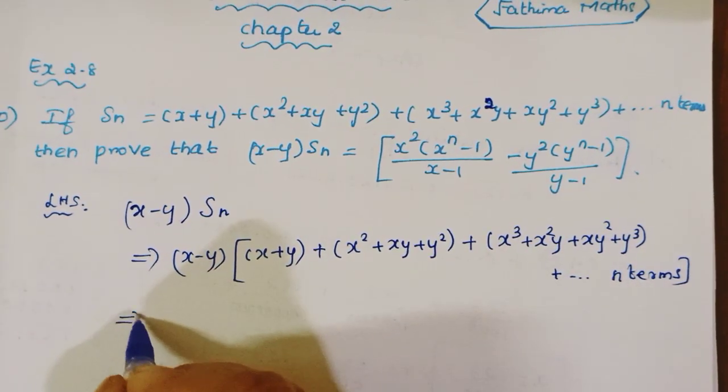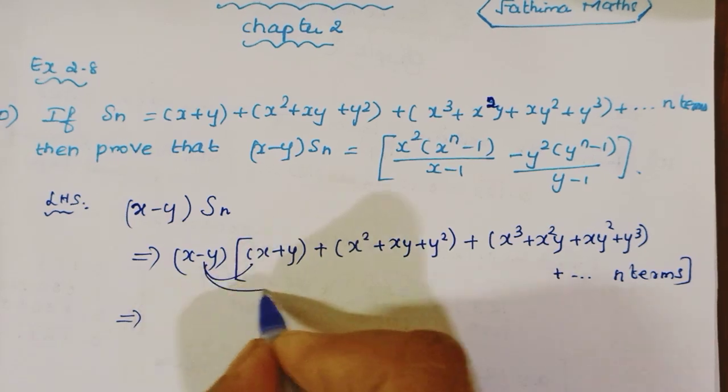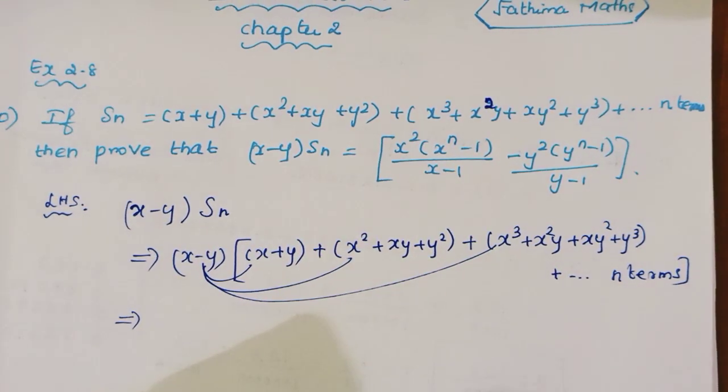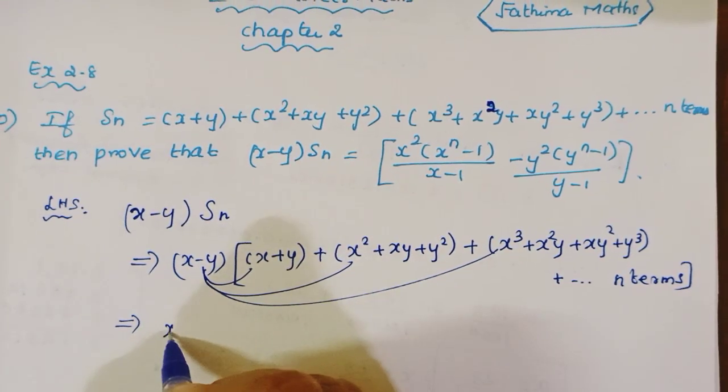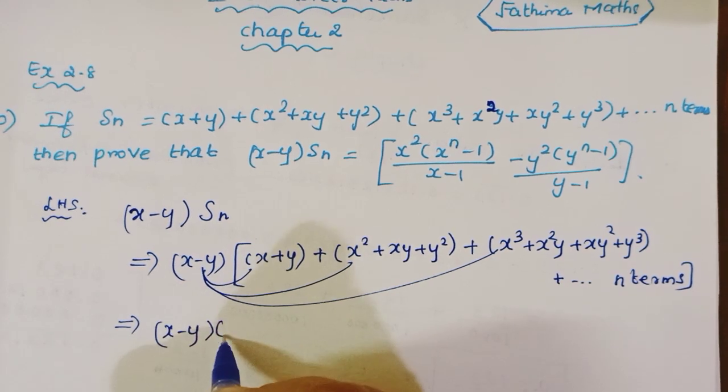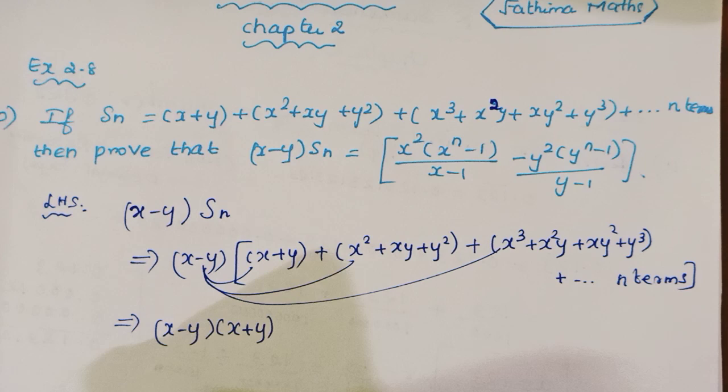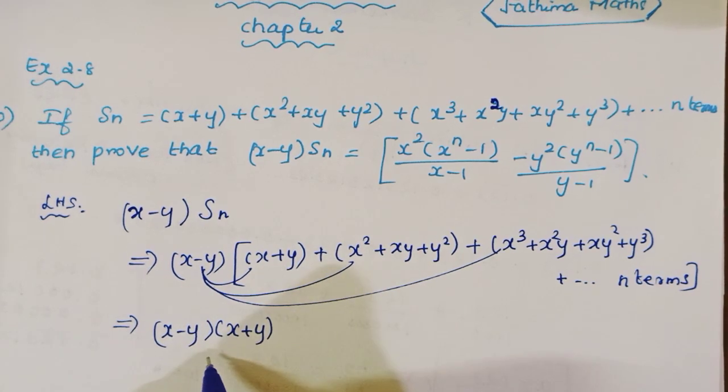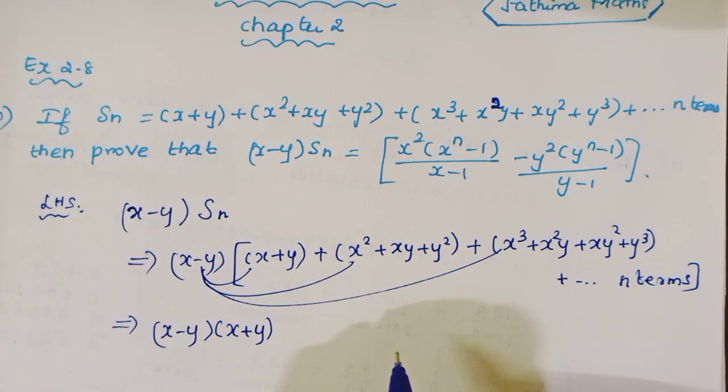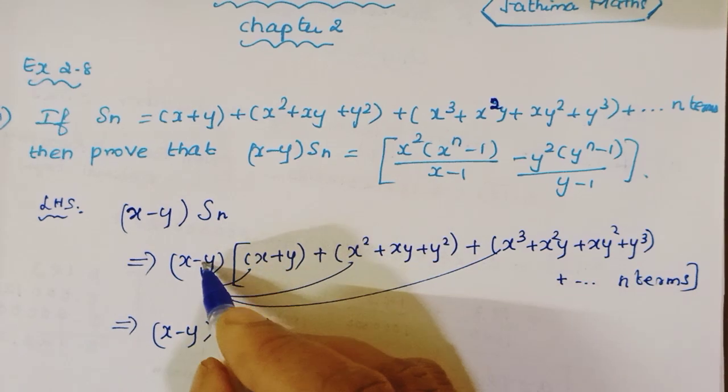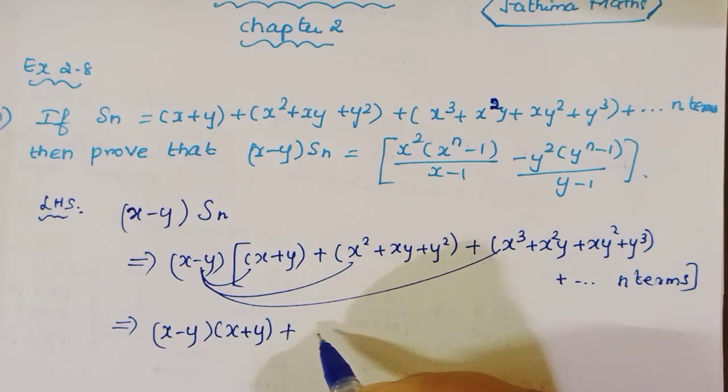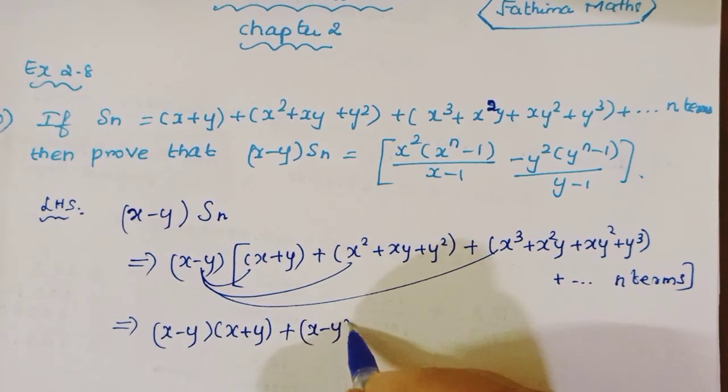Now, every term (x-y) multiply up to n terms. First, (x-y)(x+y) correct, which gives x²-y².